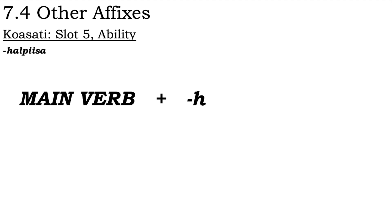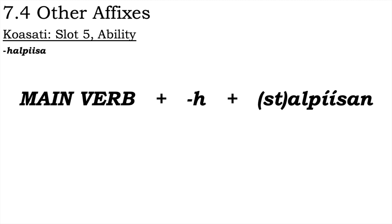The ability suffix -halpisa probably derives from an earlier clause chain construction, as with the instrumental and directional prefixes. The chain would have consisted of the main verb with the suffix -h (subordinate connector), followed by a verb related to the modern verb stalpisan 'to be enough.' This form has the instrumental prefix st-, so the original verb would have not had it and instead been alpisan.